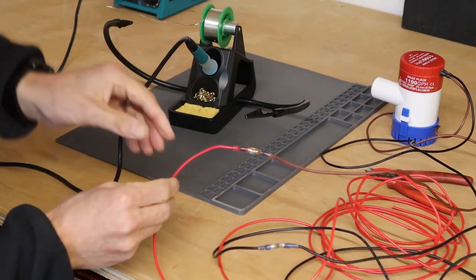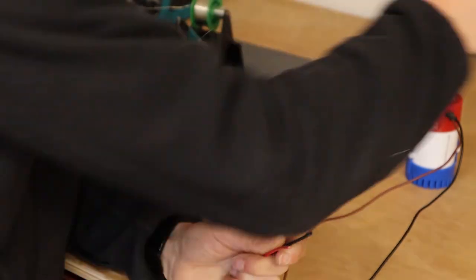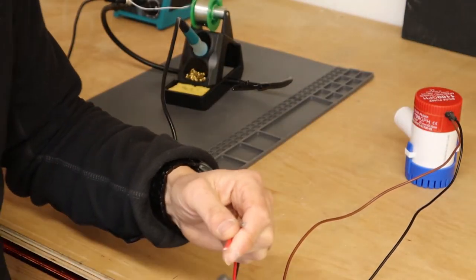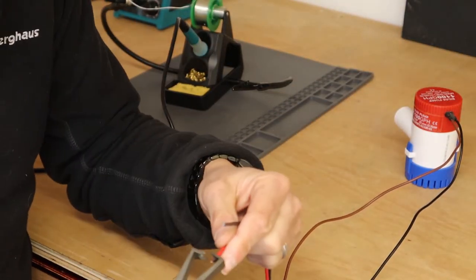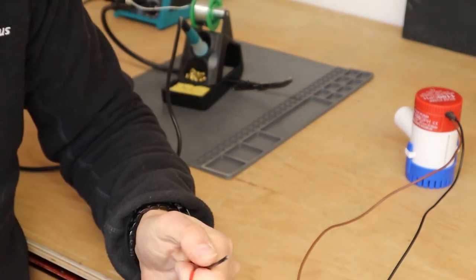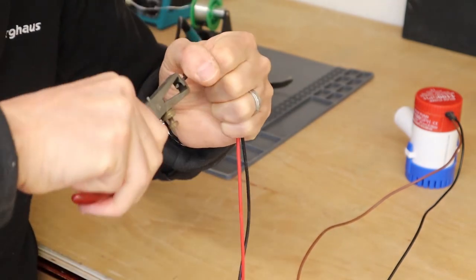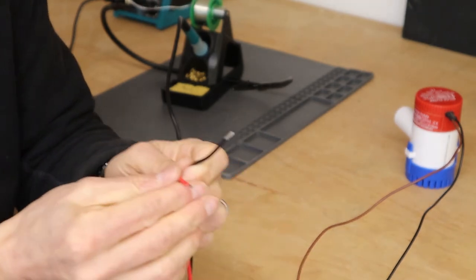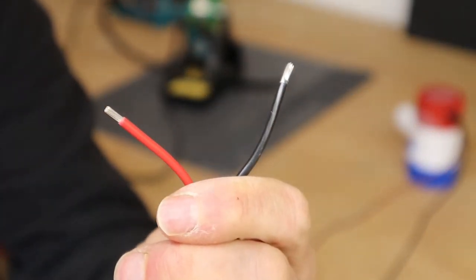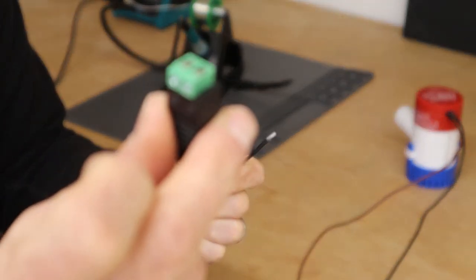Okay, so those solder joints are done. Now with the other end of the wires we just need to strip a little bit off the end, just about four or five millimeters. That's what we've got on the ends of that, and this coaxial connector.